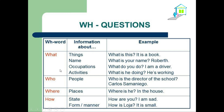Or to ask about activities: What's he doing? He's working, he's studying, he's playing, he's sleeping, etc. We can use the WH question word 'who' to ask about people: Who is the director of the school? Who is your father? Who is your brother? When asking about people in general, we use 'who.'